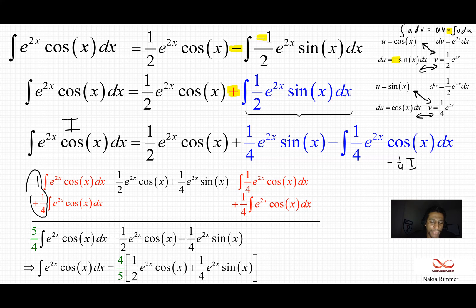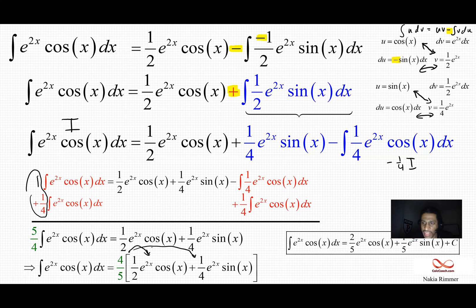I'll go ahead and distribute though where we have the first coefficient, the one that's on e to the 2x cosine x being two fifths. And then we'll have the second coefficient being one fifth, four fifths times one fourth is one fifth. And then I'll throw in the plus c now.